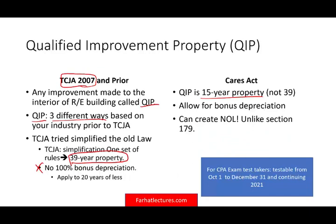Also note that unlike Section 179 — which cannot create a loss — the 100% bonus depreciation on qualified improvement property can create an NOL. So we circle back to NOL: a change in the QIP rules can generate losses that you carry back and use to get a refund from prior years.